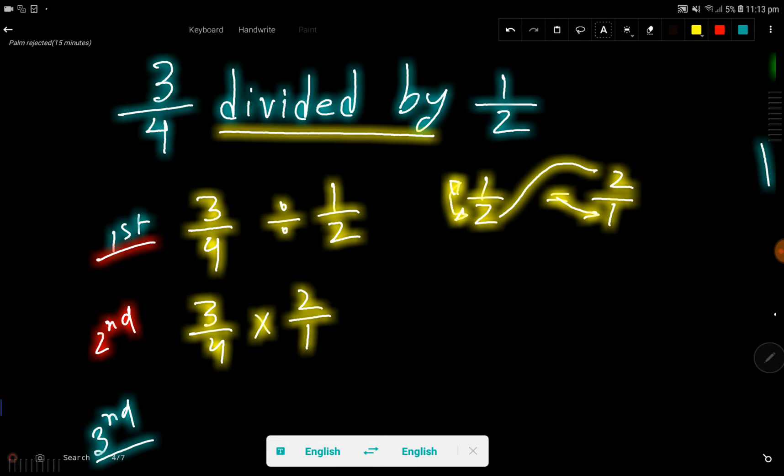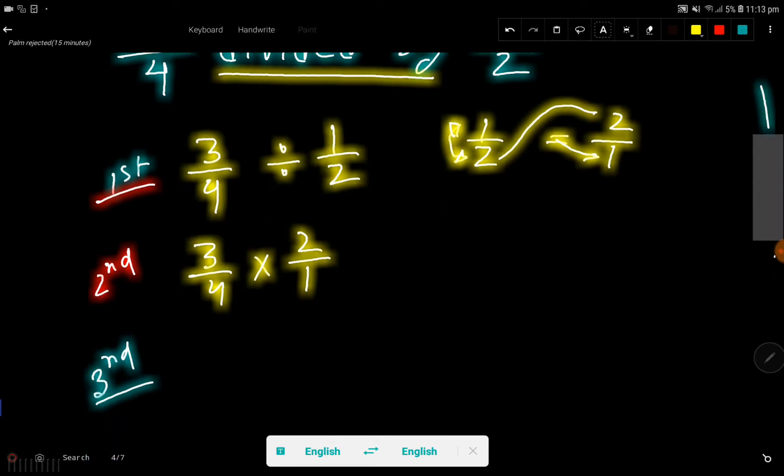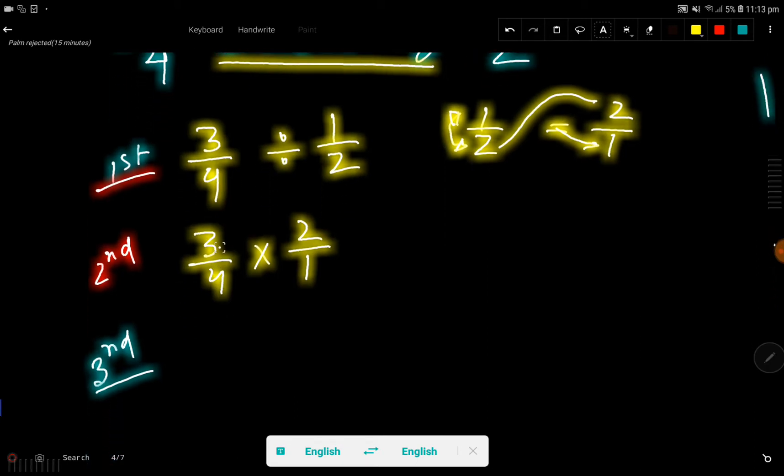Now you have to multiply numerator to numerator, then multiply denominator to denominator. So 4 times 1...